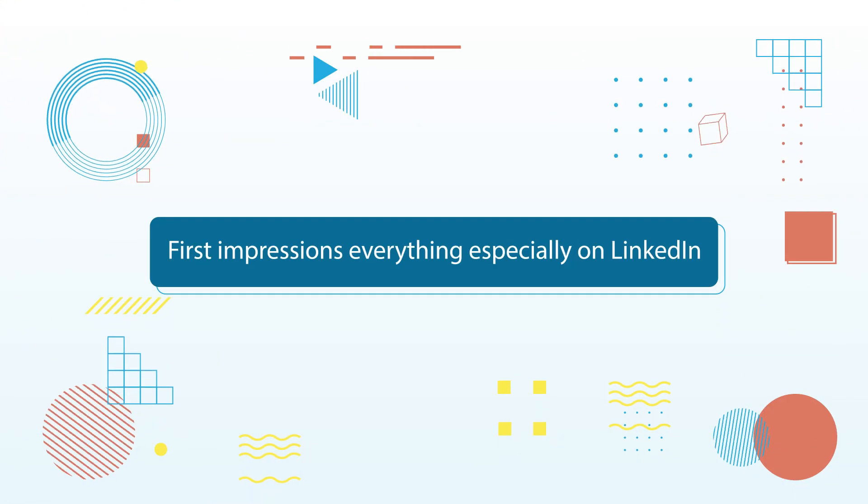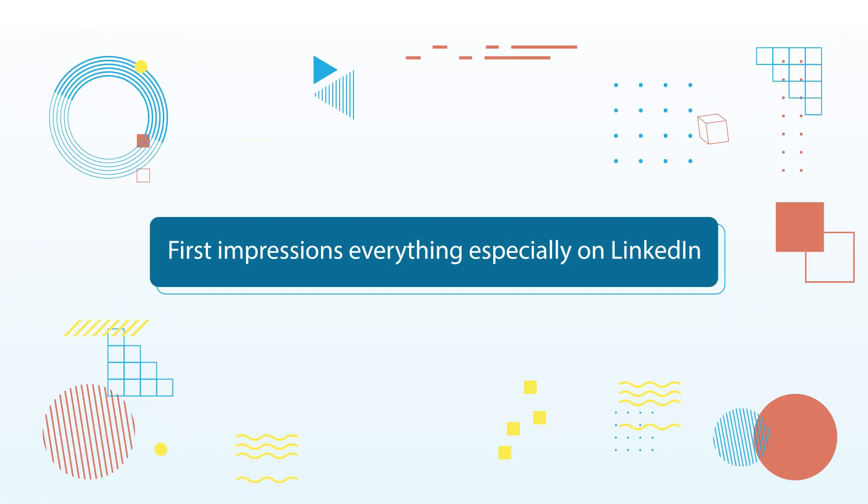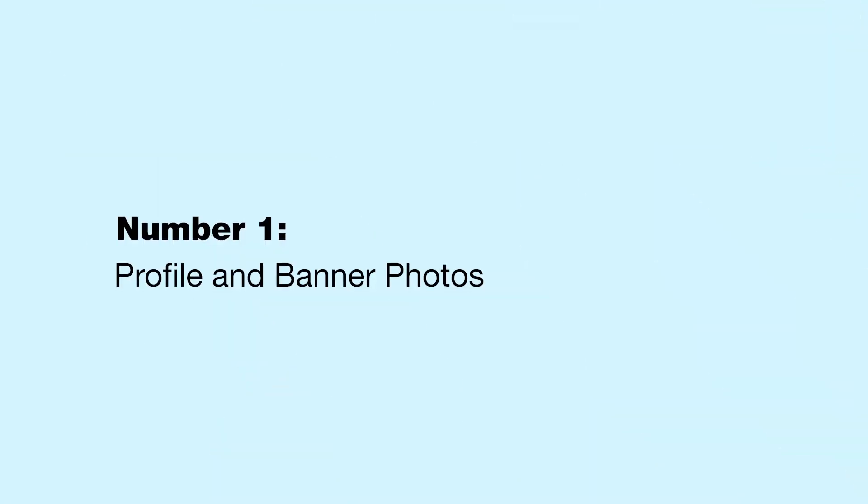First impressions are everything on LinkedIn. A LinkedIn profile already tells you what you're getting, mainly from that custom design banner photo and straight-to-the-point tagline. So if you want to optimize your LinkedIn profile for outreach, here are the three things you should especially focus on. Number one: profile and banner photos. Ideally, it's got to be professional. You should have a custom banner photo to stand out from everyone else on LinkedIn.